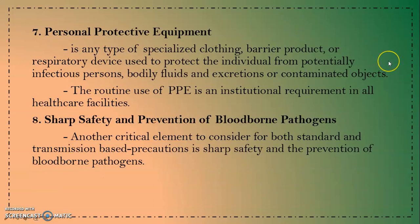The seventh component is PPE, or personal protective equipment. It is any type of specialist clothing, barrier product, or respiratory device used to protect the individual from potentially infectious persons, body fluids and excretions, or contaminated objects. The eighth component is sharps safety and prevention of blood-borne pathogens, another critical element to consider for both standard and transmission-based precautions.